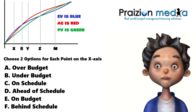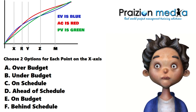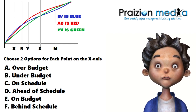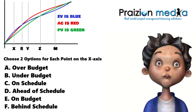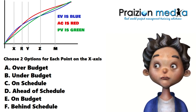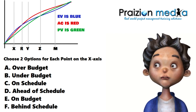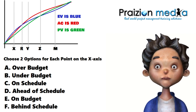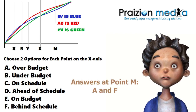At point M, you can see the earned value line is below the planned value line and the actual cost line, which is unfavorable for both time and cost — or for you 6th edition purists, for both schedule and cost. So the answer for point M is A, over budget, and F, behind schedule.